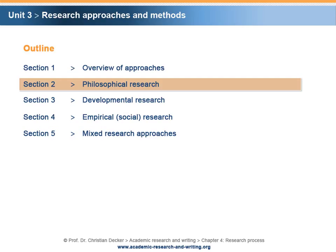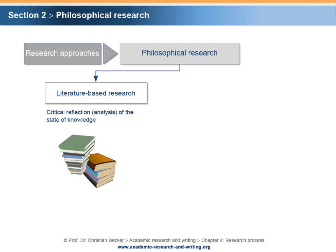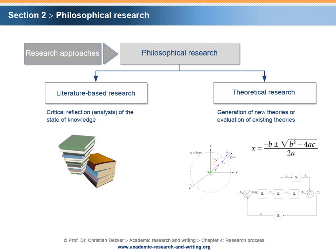Section 2 – Philosophical Research. Let us have a look at the different research approaches in detail. As pointed out, philosophical research can be specified as literature-based research, which can be defined as a critical reflection or analysis of the state of knowledge. Furthermore, philosophical research can appear as theoretical research, that is, the generation of new theories or evaluation of existing theories.